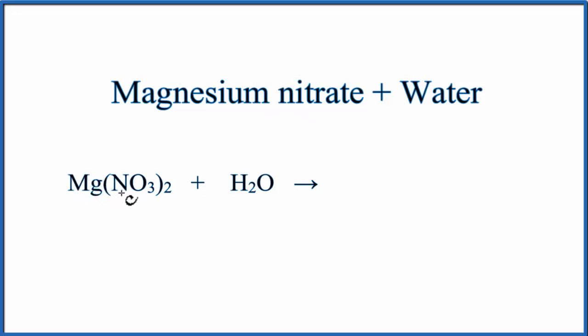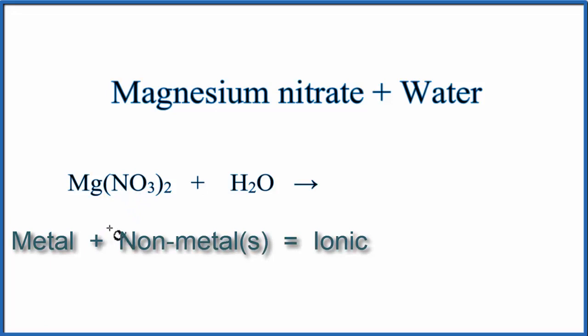Magnesium is a metal, and then N and O, those are nonmetals. When we have a metal and nonmetals, that is an ionic compound.